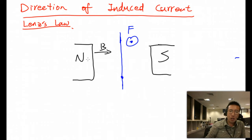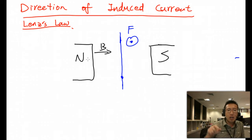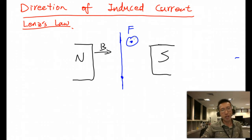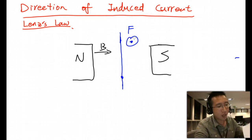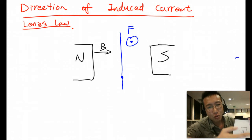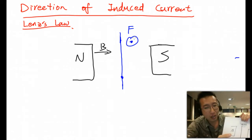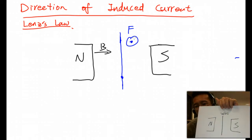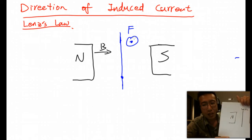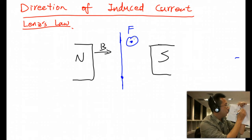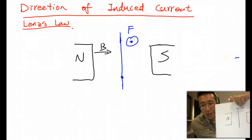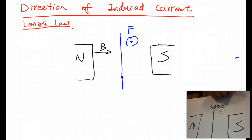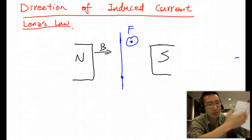That's what happens in nature — it doesn't like change and tries to go back to its original state. So what the wire does is apply a force opposite to the force we applied to it. The idea is the wire tries to push back into the page. So we pull the wire out, and the wire tries to pull itself back into the page.